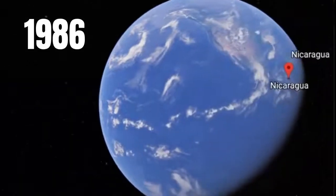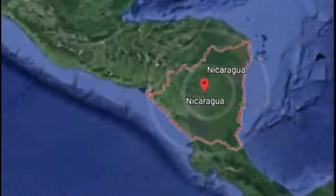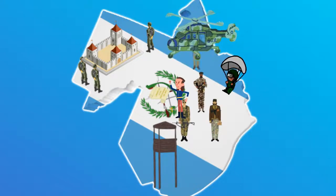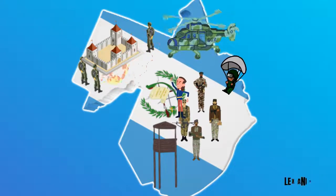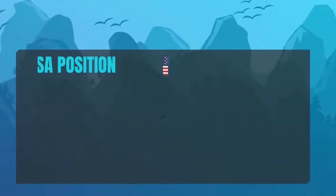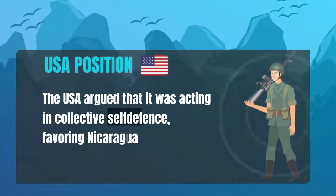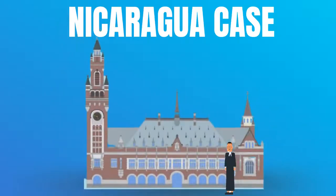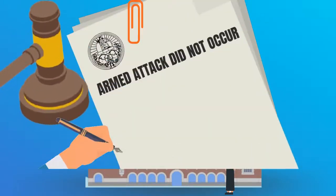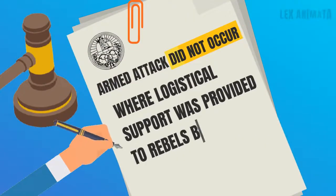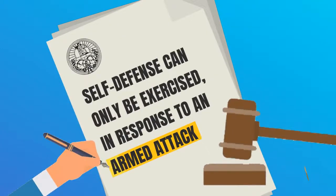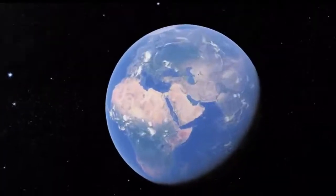In the Nicaragua case between the USA and Nicaragua, Nicaragua claimed that the USA had supplied weapons and training to a rebel group in order to attack Nicaragua's government. The USA argued it was acting in collective self-defense, favoring Nicaragua's neighboring states which Nicaragua had attacked. The ICJ held that an armed attack did not occur where logistical and financial support was provided to rebels by a third state, and therefore that self-defense can only be exercised in response to an armed attack.